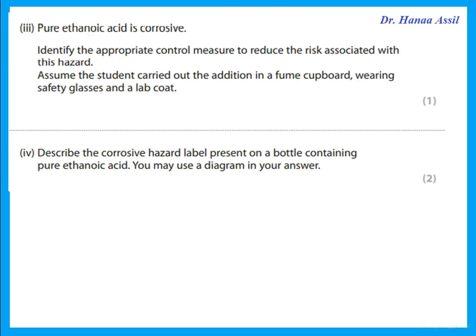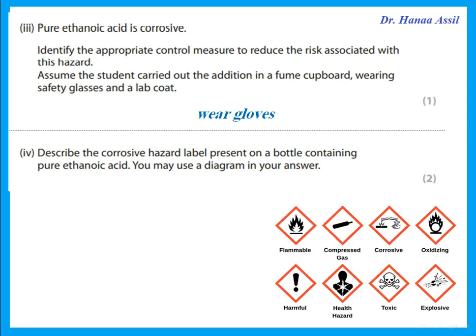Pure ethanoic acid is corrosive. The appropriate control measure to reduce the risk, assuming the student is already in a fume cupboard and wearing safety glasses and a lab coat, is to wear gloves. You are also required to know the hazard labels. The corrosive hazard label shows two test tubes with drops falling on a hand and on a metal surface. You can either describe it or draw this hazard label.